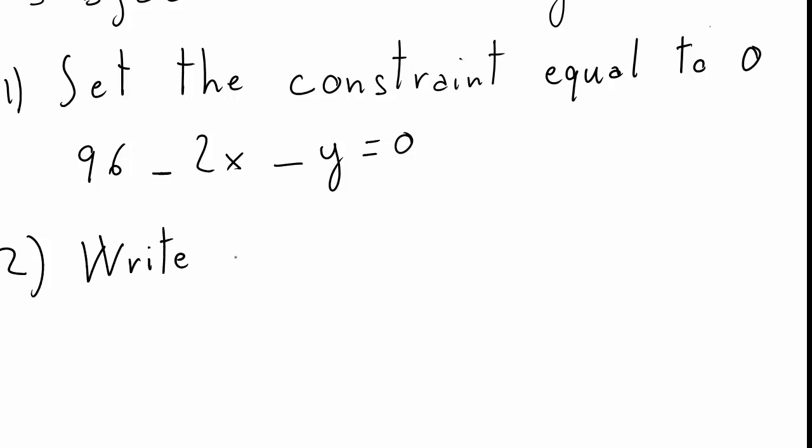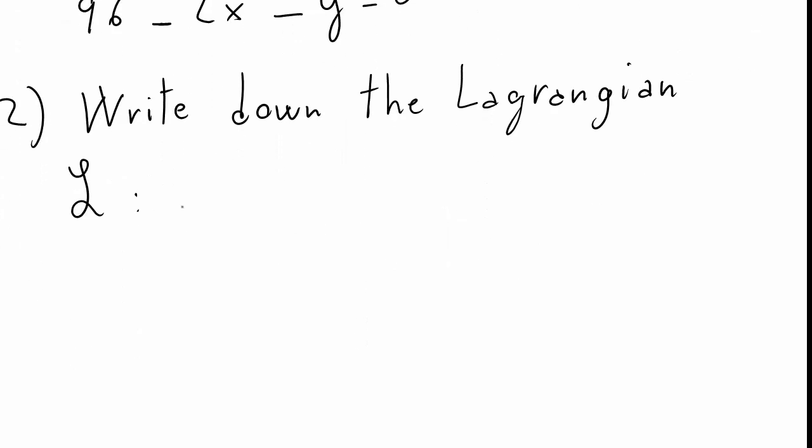Once I have performed that, in the second step I finally write down the Lagrangian function. You will remember that the Lagrangian function is composed by two elements. Our Lagrangian function that I will indicate with L is simply the utility function or the function that I want to find the maximum of. In our application for labor economics this would be a utility function and the budget constraint.